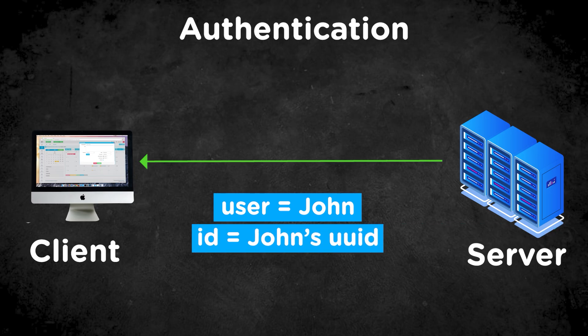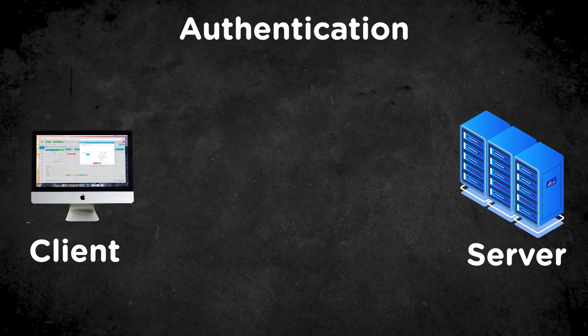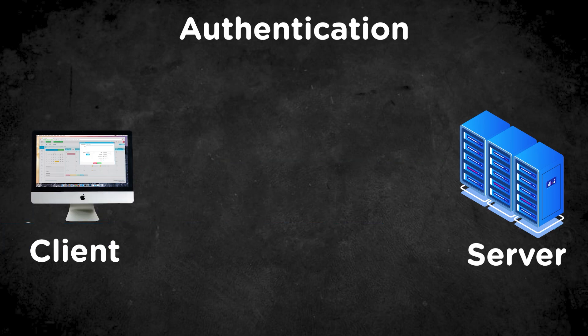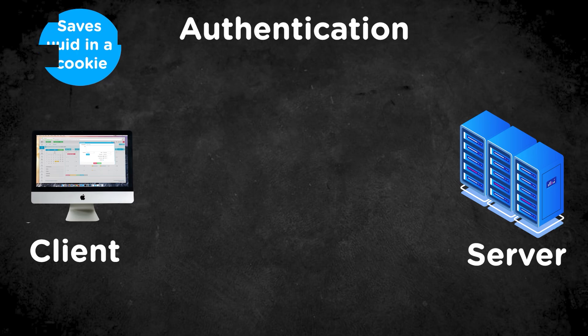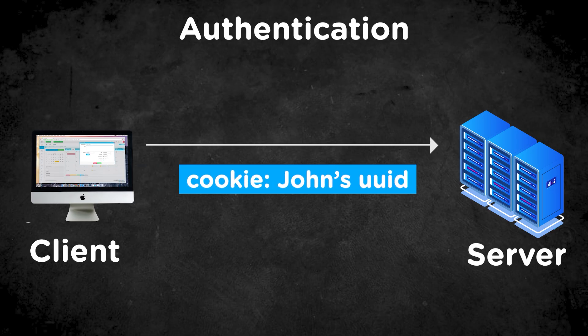This unique ID is how the server determines that this is always you when you make further requests. So it's going to send down that specific ID associated with John. On the client, you're then going to take that special ID and it's going to be saved most likely in a cookie. That way, every time you make a future request that requires authorization, that cookie with your specific ID for John is going to be sent along with your request, so the server knows this is coming from John.